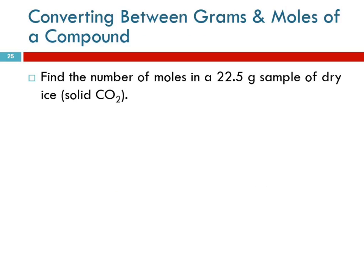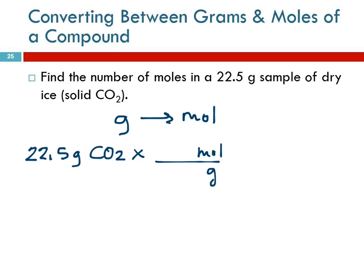So we can use the molar mass to convert between grams and moles of a compound. Find the number of moles in a 22.5-gram sample of dry ice. Dry ice is solid carbon dioxide. We're given grams, we're asked to find moles. So we've got 22.5 grams of CO2, and then I'm going to multiply that by moles per gram of CO2, so that the grams cancel out.